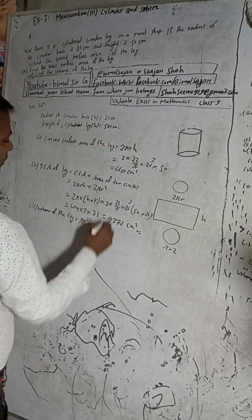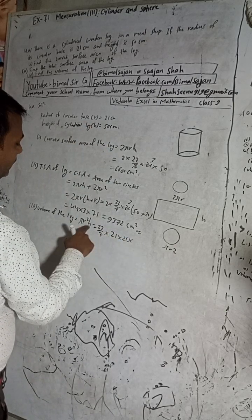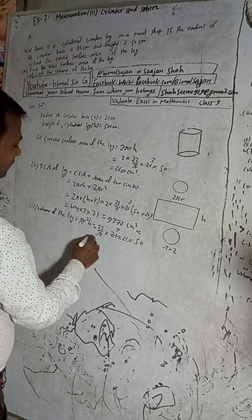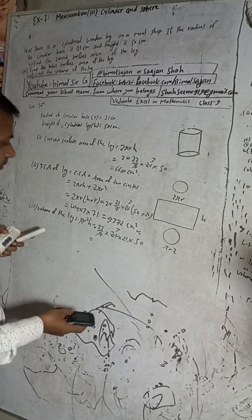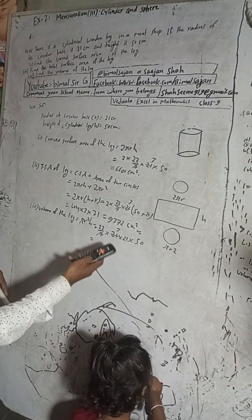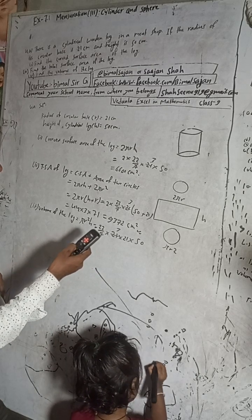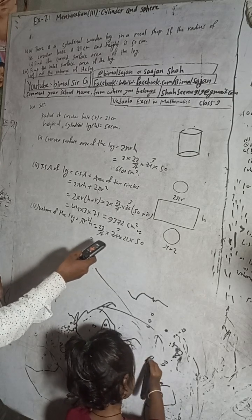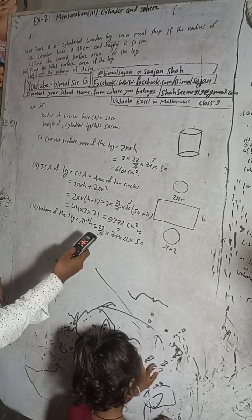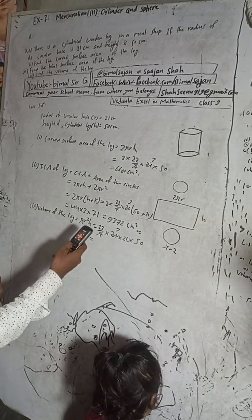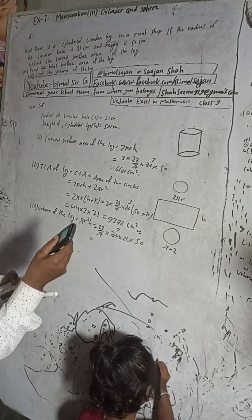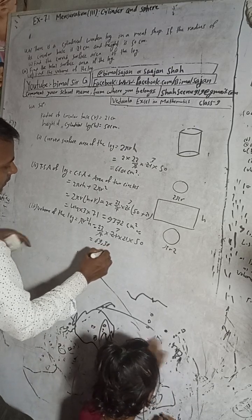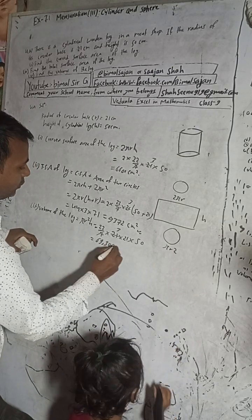Radius is 21, so r² = 21 × 21. Volume = (22/7) × 21 × 21 × 50. Cancelling 7 into 21 gives 3, so 22 × 3 × 21 × 50 = 66 × 21 × 50 = 69,300. The volume of the log is 69,300 cm³.